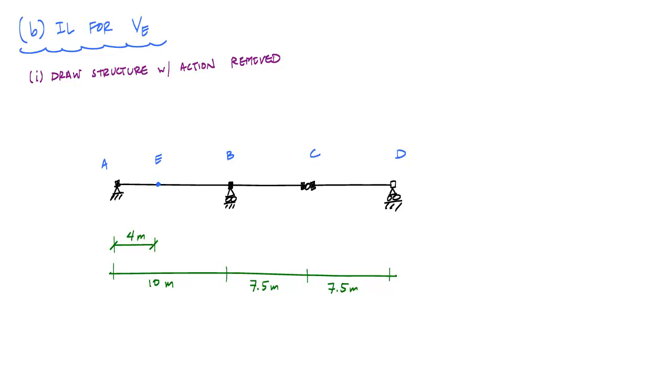All right, so the next thing we want to do is determine the influence line for the internal shear at point E. And that means we've got to draw the structure with the action removed.